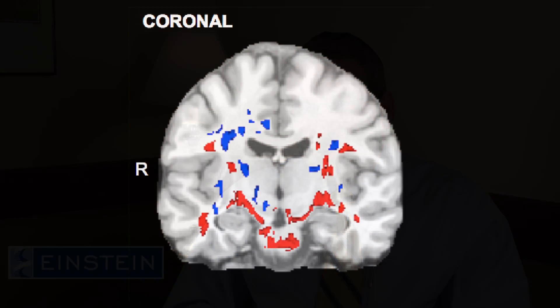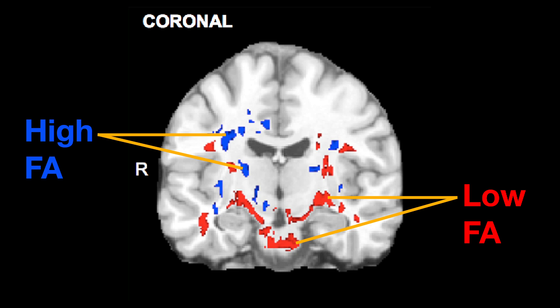As we would have expected in looking at these individuals, we found multiple areas where the fractional anisotropy was abnormally low. What was interesting is that we also found quite extensive, at all points in time, areas of abnormally elevated FA.